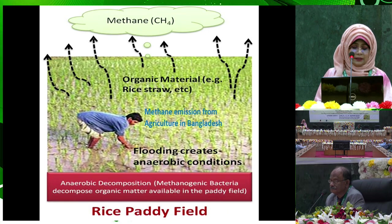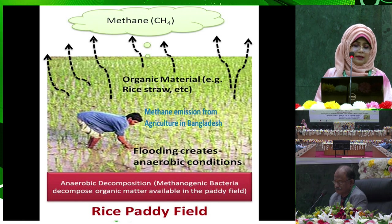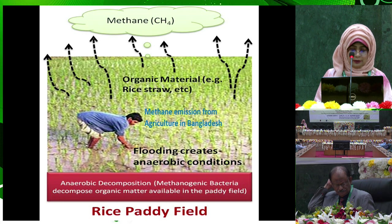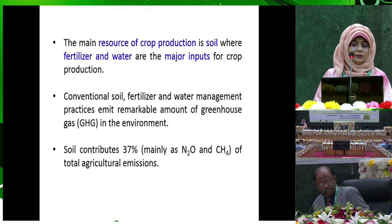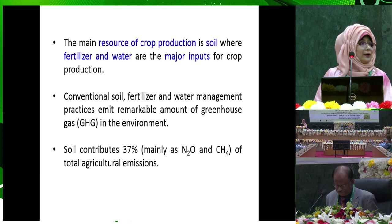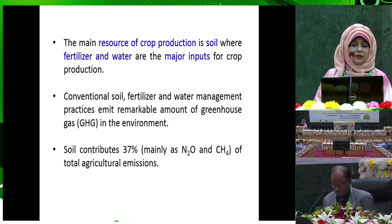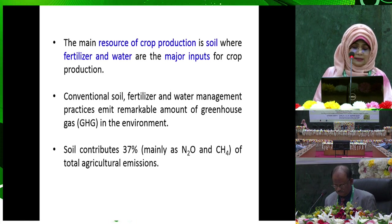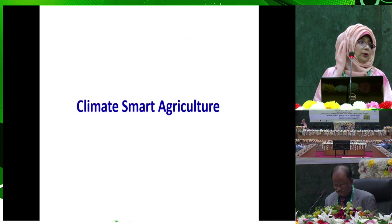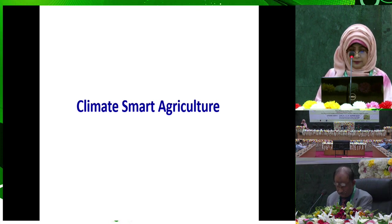Bangladesh is dependent on rice, and from rice paddy fields there is methane emission from flooded fields. The main resource of crop production is soil, where fertilizer and water are the major inputs. Conventional soil fertilization and water management practices emit a remarkable amount of greenhouse gas, so we go for climate smart agriculture.